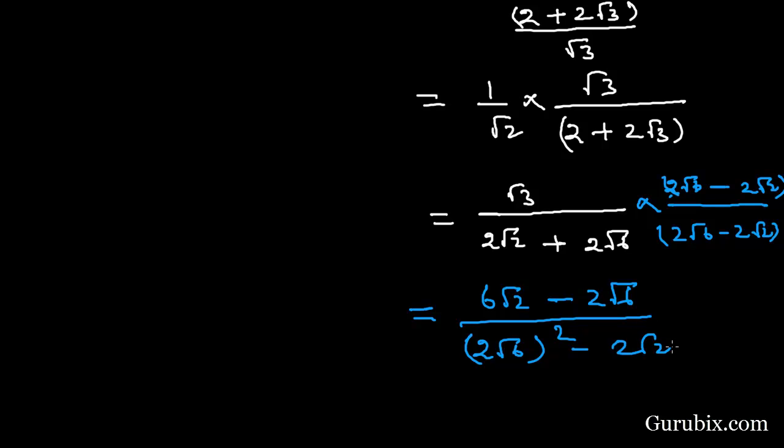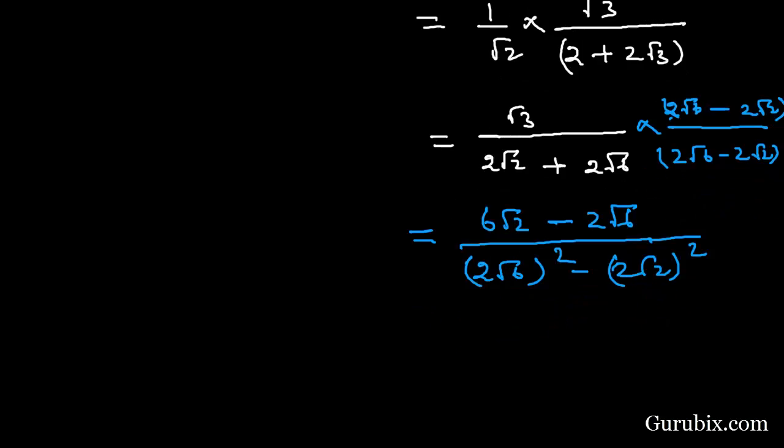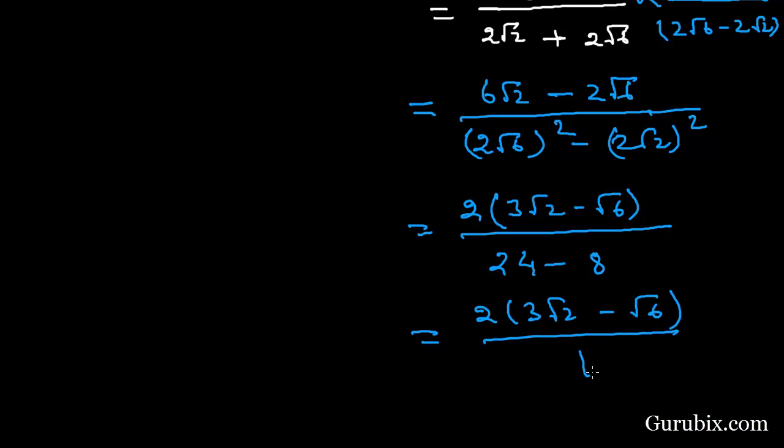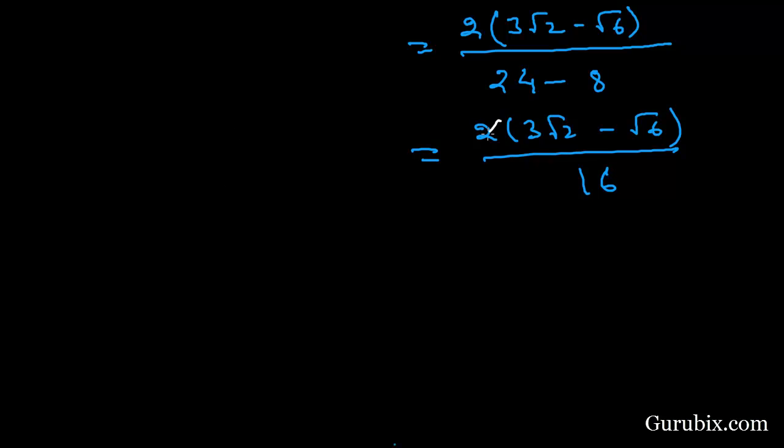Solving further, this equals 2 times 3 root 2 minus root 6 over 24 minus 8, which is 2 times 3 root 2 minus root 6 over 16. We can cancel out this 2 with 16 to get 8.